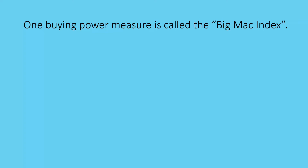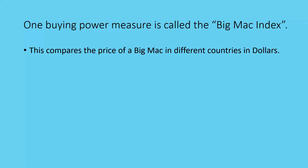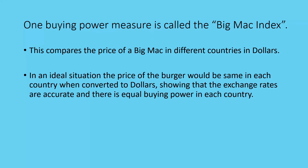One buying power measure is called the Big Mac Index. It was made up by economists in a sort of joking way but turned out to be rather useful. It compares the price of the Big Mac in different countries in dollars — just the burger itself, not with any sides. In an ideal situation, the price of the burger would be the same in each country when converted to dollars, showing that exchange rates are accurate and there is equal buying power in each country.